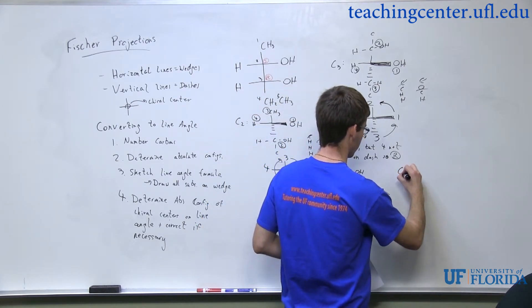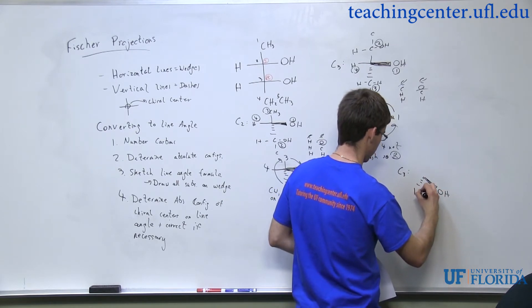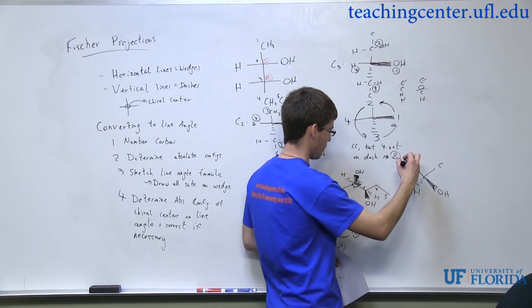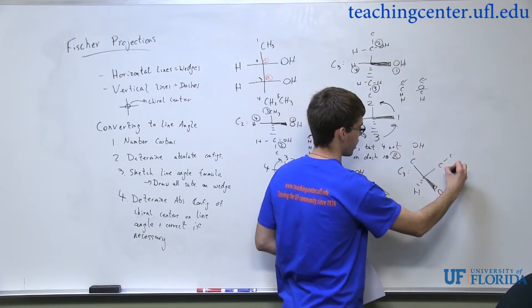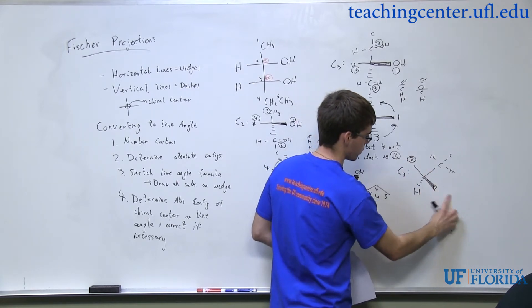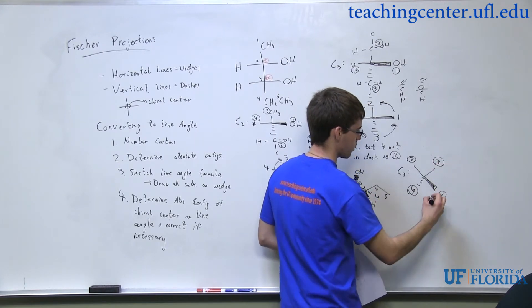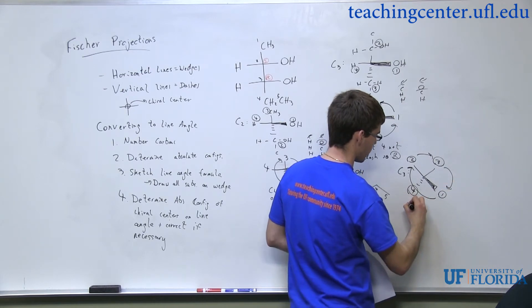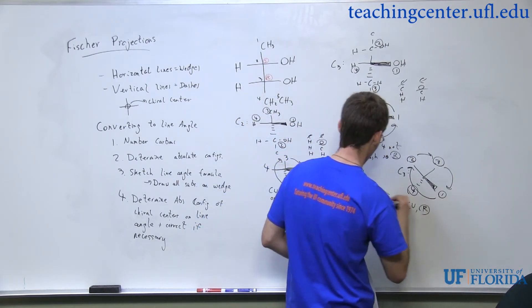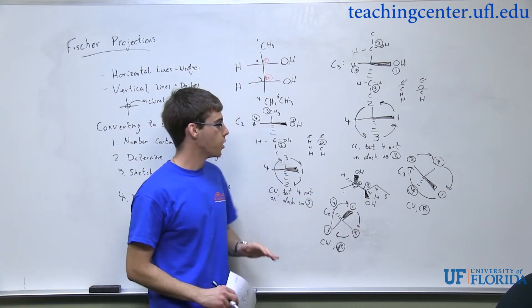Let's also check C3. This carbon is bonded to an OH, so this group over here is going to take priority two. We know this will be one, this will be four, and this group over here will be three. This is again clockwise, and the four is indeed on a dash, so this will be R. Well, this is good, because as we saw in our Fischer projection, center number three was R. So we're good to go — we don't need to do anything there.